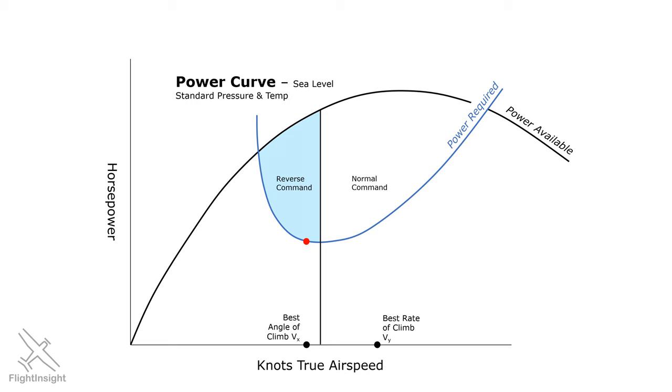Here's the important point. VX is to be found in this region. Flight at best angle of climb speed takes place in reverse command.